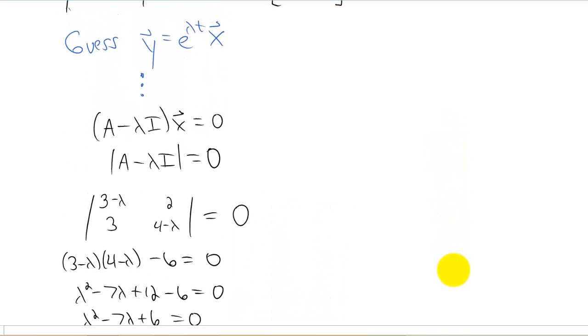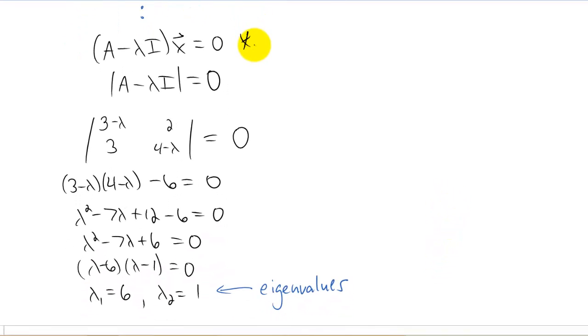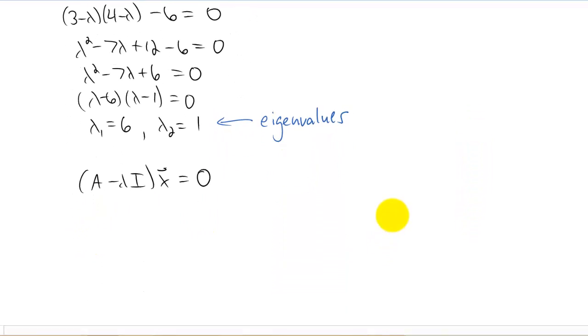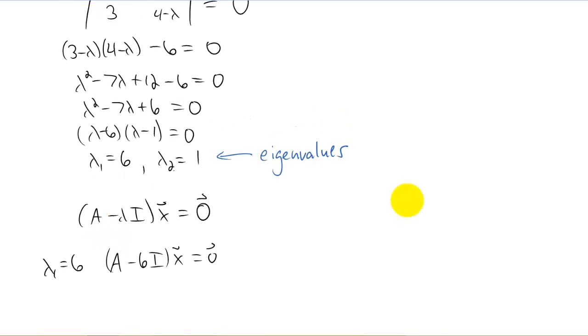So we're doing pretty good so far. Our ultimate goal is to figure out what lambda is, and we did that, but we also have to figure out what x is. And to find x, we actually go back to this piece of the problem right here. What we can do is write down that piece of the problem and solve this piece of the problem for x for each of our two values for lambda. So let's start with lambda equals 6. And my apologies, this should be the zero vector right here, not just zero.